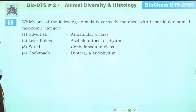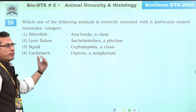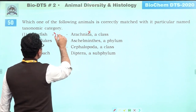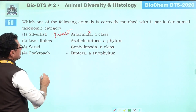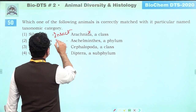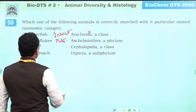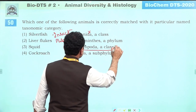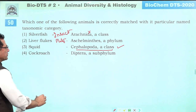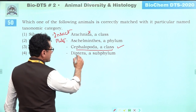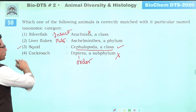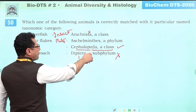Which animal is correctly matched with its taxonomic group? Silverfish is not an arachnid — it is an insect. Liver flukes are not Aschelminthes — they are Platyhelminthes. Squids are mollusks belonging to class Cephalopoda — this is correct. Cockroaches are not in order Diptera. So answer is third: squids are mollusks, class Cephalopoda.